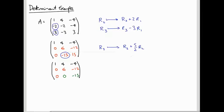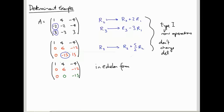Ok and this is in echelon form, and these are type 1 row operations. They don't change the determinant. So rather than calculating the determinant of A directly, I can just calculate the determinant of this, which remember it's upper triangular matrix all the non-zero entries are on the diagonal or above it, so I just get the product of the three diagonal entries. So it's 1 times 6 times -15 which is -90.